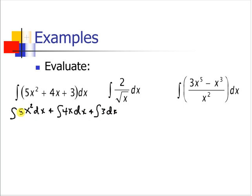We can use the third property to bring this constant out front. So we have 5 times the integral of x² dx plus 4 times the integral of x dx plus the integral of 3 dx.